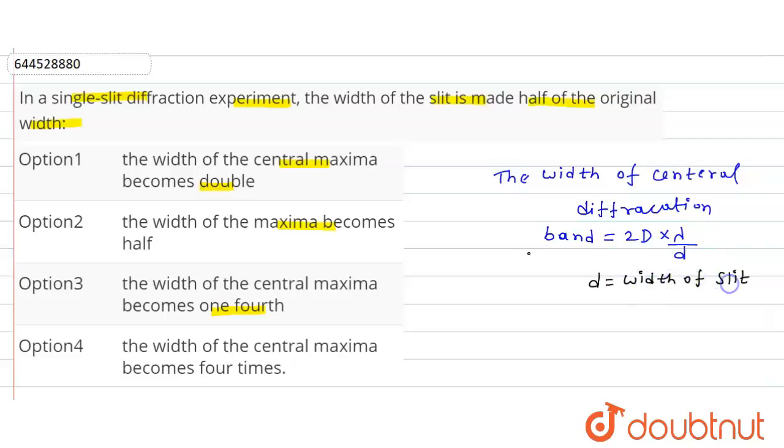So on the doubling of the width of slit, the size of the central diffraction band reduced to the half value. If d will be increased by two times means 2d, then the central diffraction band reduced by the half value.